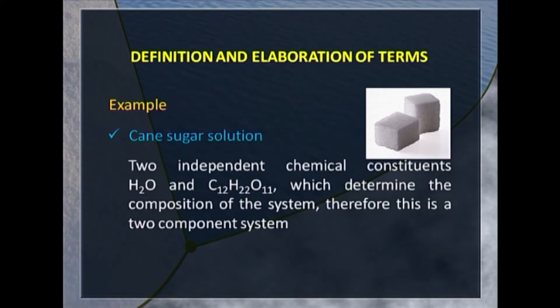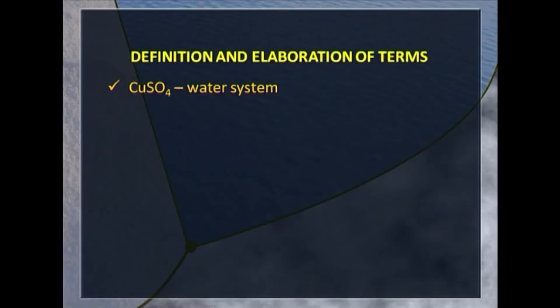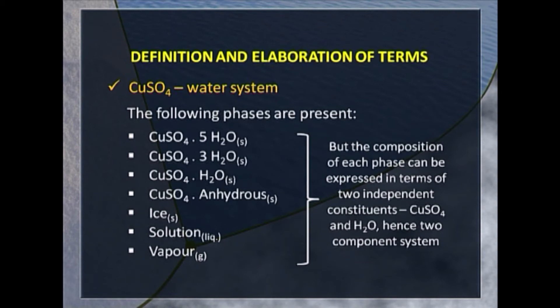Consider cane sugar solution. If it is unsaturated, it is a homogeneous system; if saturated, it is heterogeneous with two phases. There are two independent chemical constituents — H2O and sugar (C12H22O11) — which determine the composition of the system. Both need to be specified, so it is a two-component system. Similarly, the copper sulphate–water system, despite having phases like hydrates, anhydrous copper sulphate, ice, solution and vapour, the composition of each phase can be defined by copper sulphate and water alone — making it a two-component system.